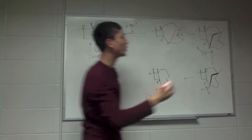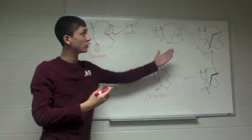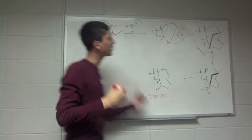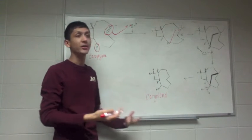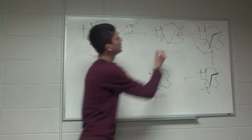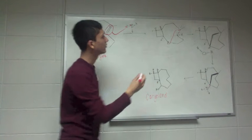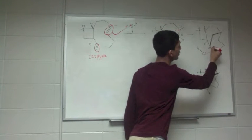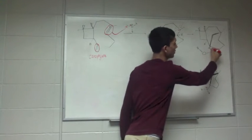It will form a bridgehead. This bridgehead can be in front, as drawn here with wedges, or it can attack from the back, shown as dashed — so it can be either. Both anomers are formed. Since this carbon previously had four carbons attached to it and now only has three, there is a carbocation formed right here.